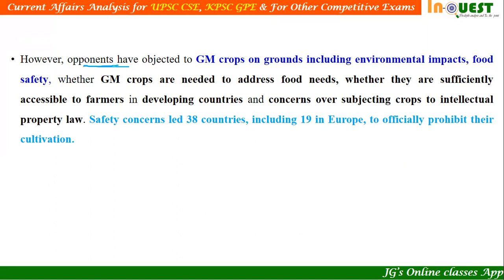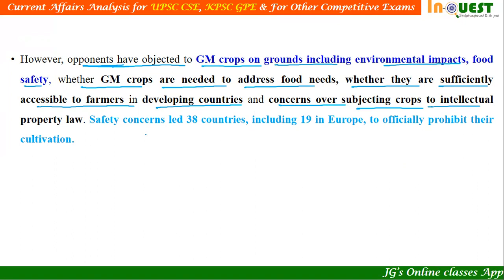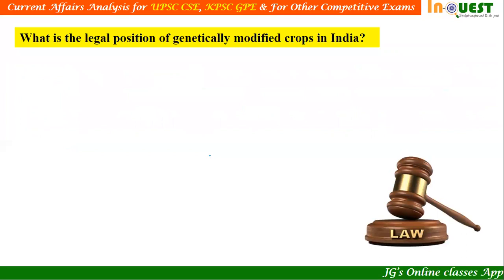There are opponents to GM crops as well. People have objected to GM crops on grounds including environmental impacts, food safety, whether GM crops are needed to address food needs, whether they are sufficiently accessible to farmers in developing countries, and concerns over subjecting crops to intellectual property law. When such modifications are under IPR, it becomes very expensive and cannot easily reach farmers. Safety concerns led 38 countries, including 19 in Europe, to officially prohibit their cultivation.